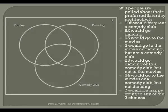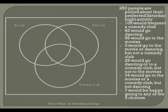Starting with the 105 who would frequent a comedy club — that's the people who belong in this circle. This circle is broken down into four subparts: those who would only go to a comedy club; those who would go to dancing or a comedy club but not the movies; those who would go to the movies or a comedy club but not dancing; and people who would prefer all three. I don't have enough information yet to know how that 105 is broken down.